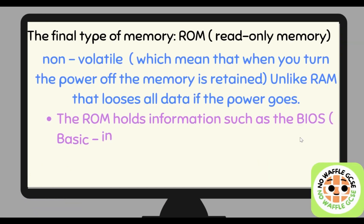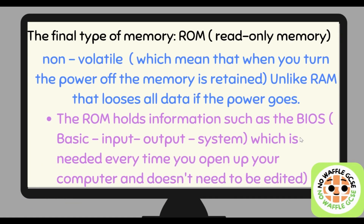The final type of memory we're looking at in this video is ROM, the Read Only Memory. We've talked about volatile memory, which is a temporary store. ROM is an example of non-volatile memory, which means that when you turn the power off, the memory is retained — unlike the RAM, which loses all of its data as soon as the power goes.